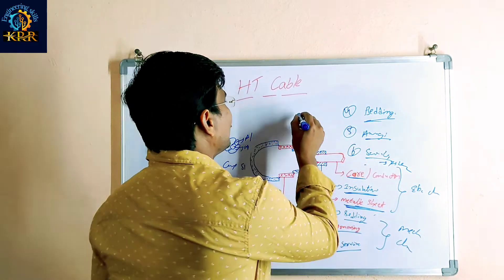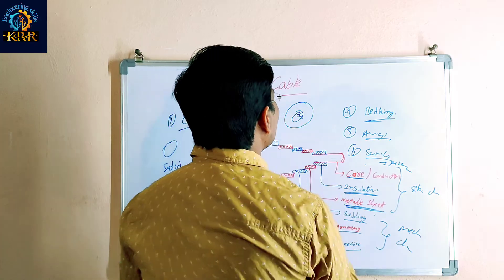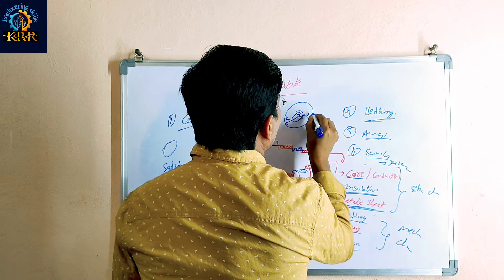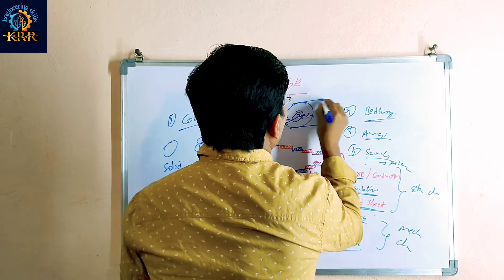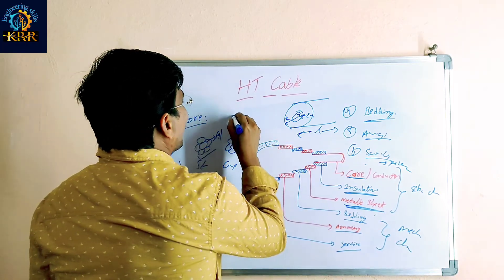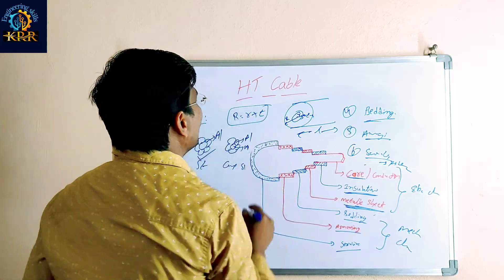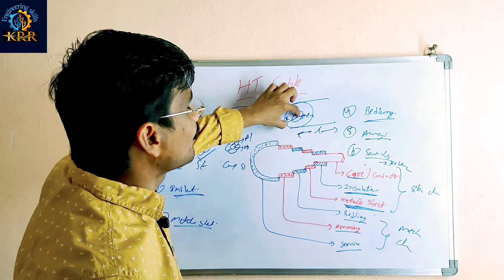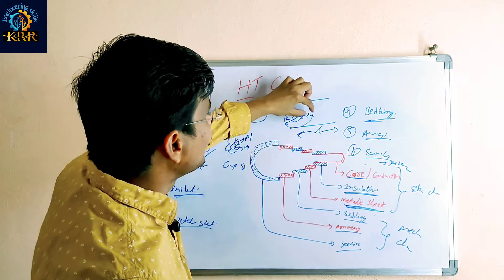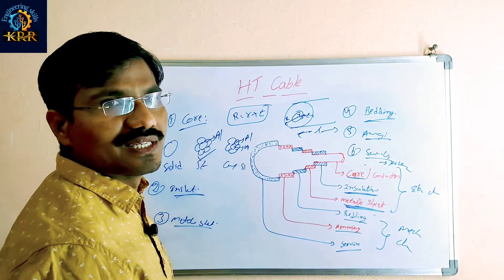Looking at cable dimensions: the core has a radius of small r. The cable has an overall radius capital R. The insulation has a thickness t, and L is the length of the cable. Overall R equals small r plus 3t — capital R is the radius of the cable, small r is the radius of the core, t is the thickness of the insulation, and L is the length of the cable.